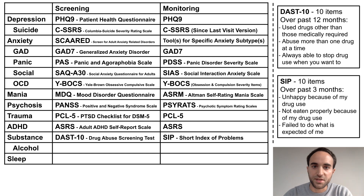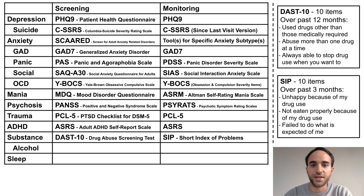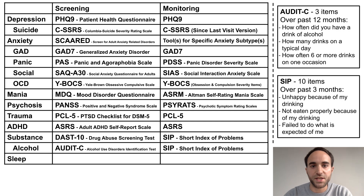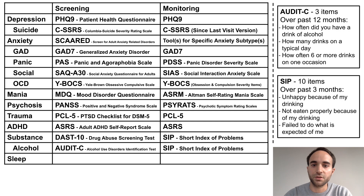For substance use disorders, the DAST-10 is a general screen for abuse of any kind of drug. The SIP can be used to monitor for consequences of problem drug use over time. For alcohol use disorders specifically, the AUDIT-C is a very brief tool validated for screening, while the SIP can similarly be used to monitor for consequences of alcohol use.